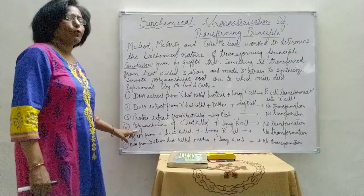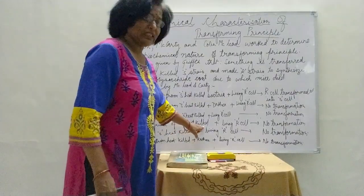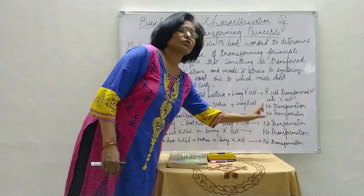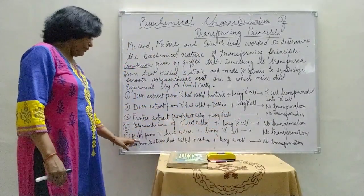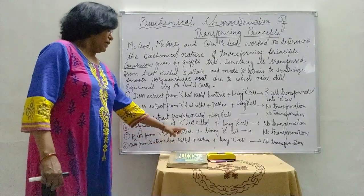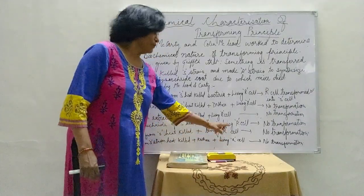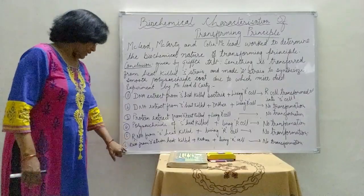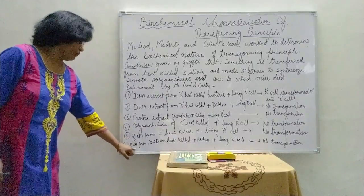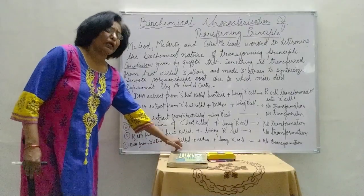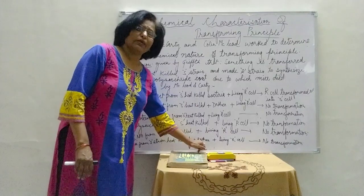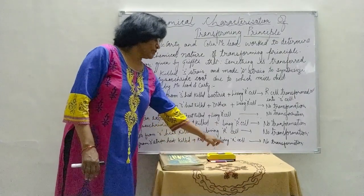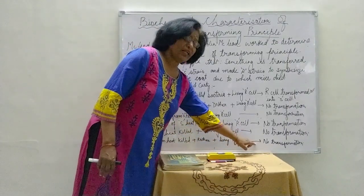In the fourth series, they extracted polysaccharides from S type heat-killed bacteria and inserted into living R cell — the result was no transformation. In the fifth series, RNA from S type heat-killed bacteria was injected into living R cell — the result was no transformation. In the sixth series, they took RNA from S type heat-killed bacteria, digested it with RNase — the RNA digesting enzyme — and inserted into living R cell. The result was again no transformation.